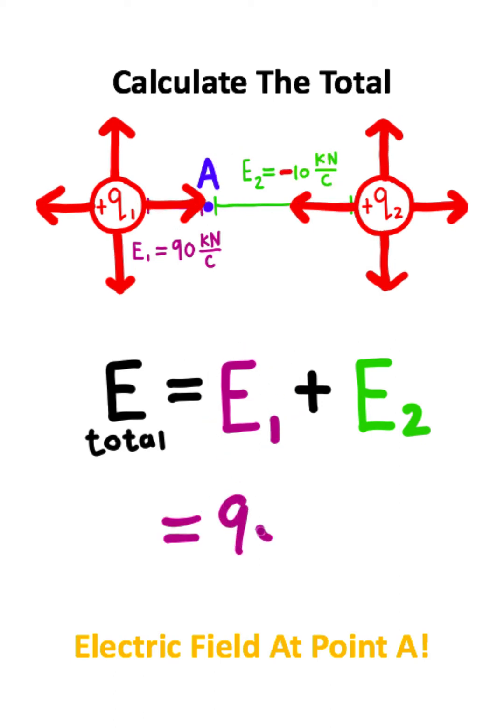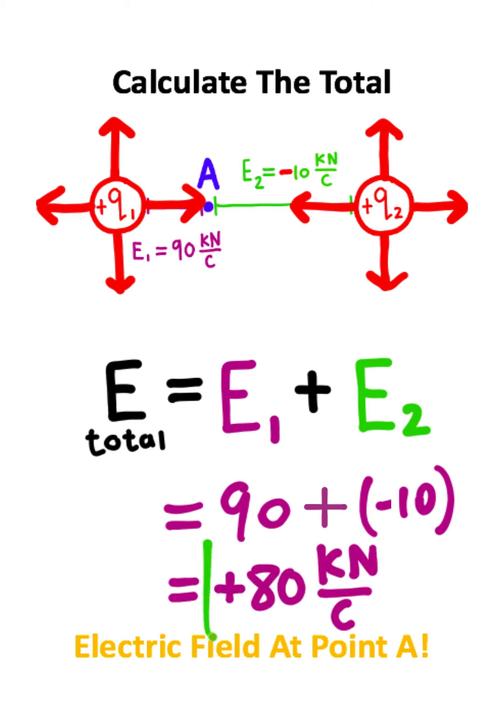So the first electric field is 90 kN per coulomb. The second electric field is negative 10 kN per coulomb. 90 plus negative 10 is the same thing as positive 80 kN per coulomb. So this is the total electric field and the answer to the problem.